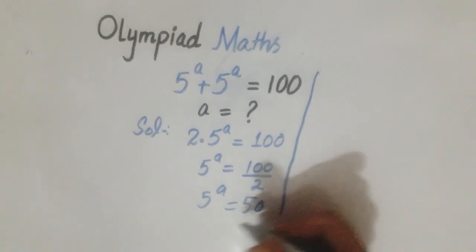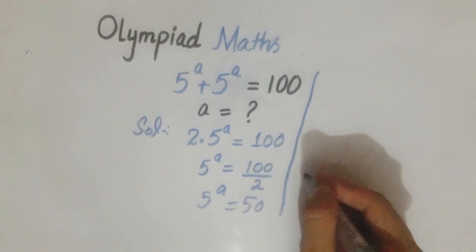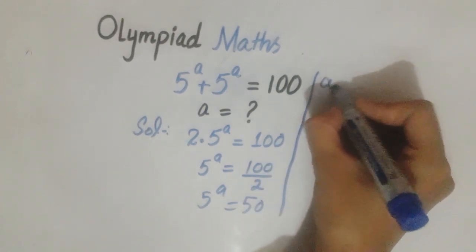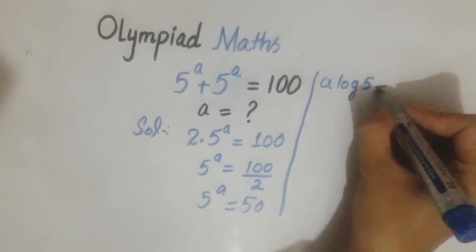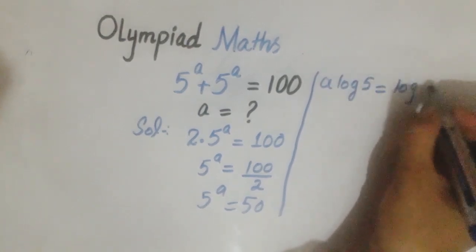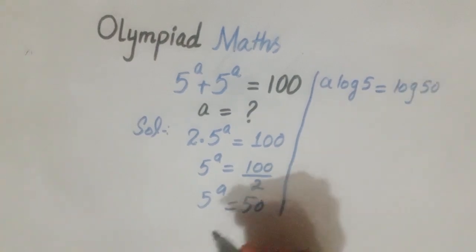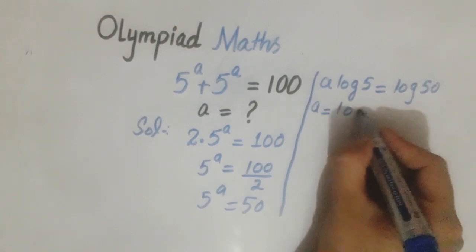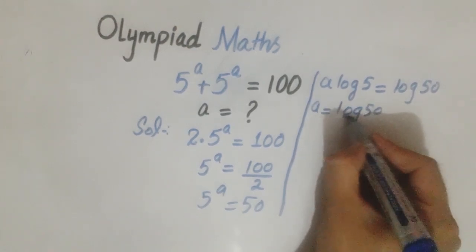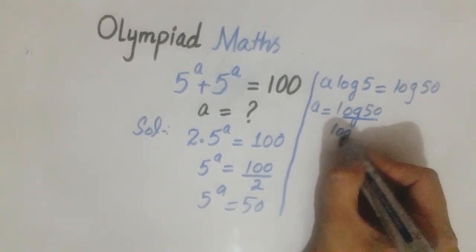Now we will apply the logarithm on both sides. We get a times log 5 equals log 50, because in the logarithm rule, the power comes to the front. Now we write a equals log 50 divided by log 5.